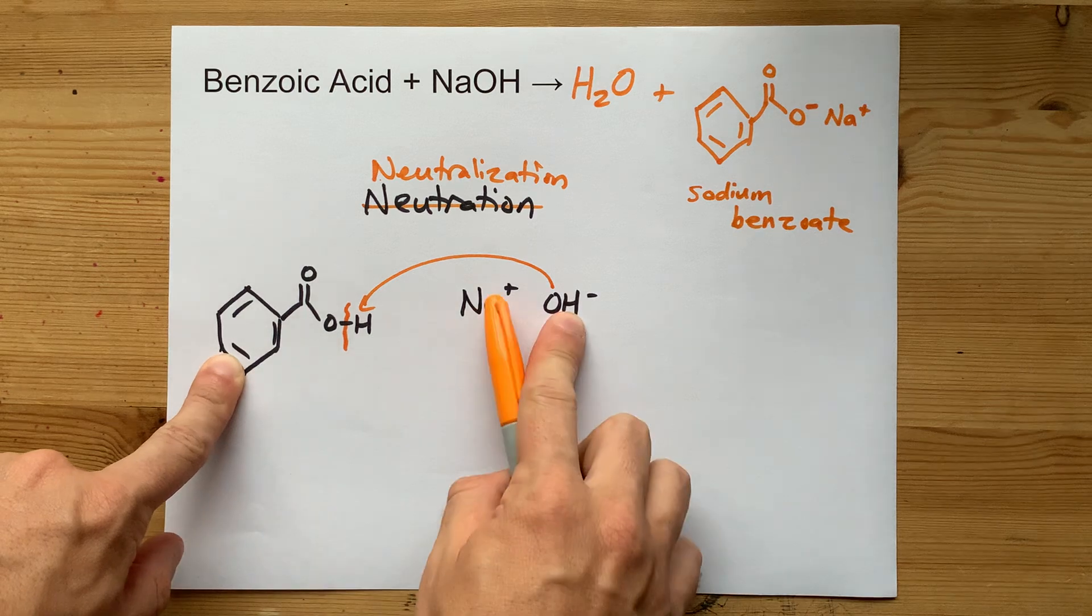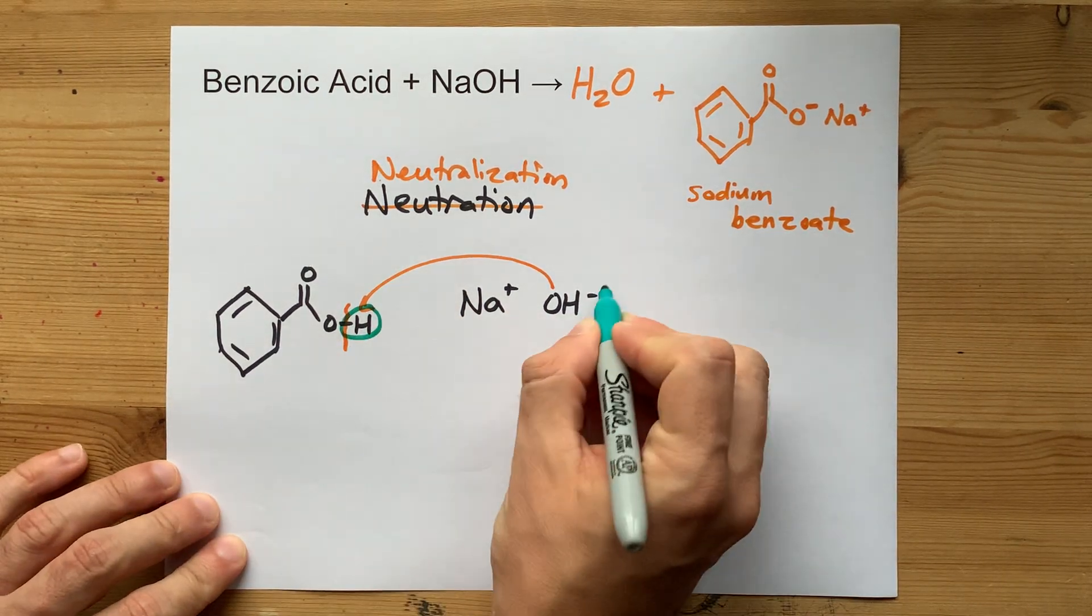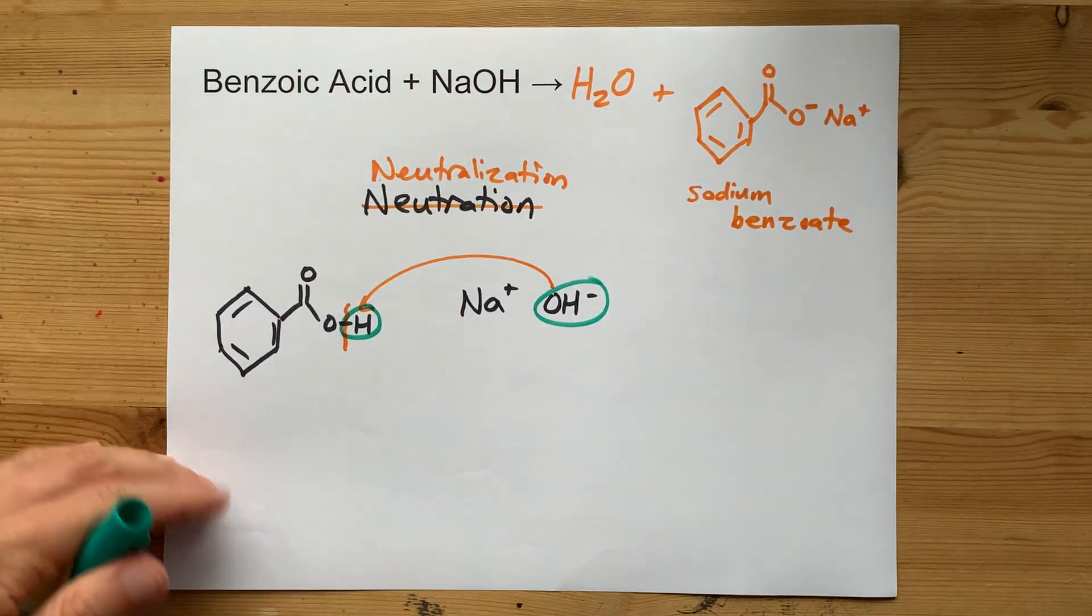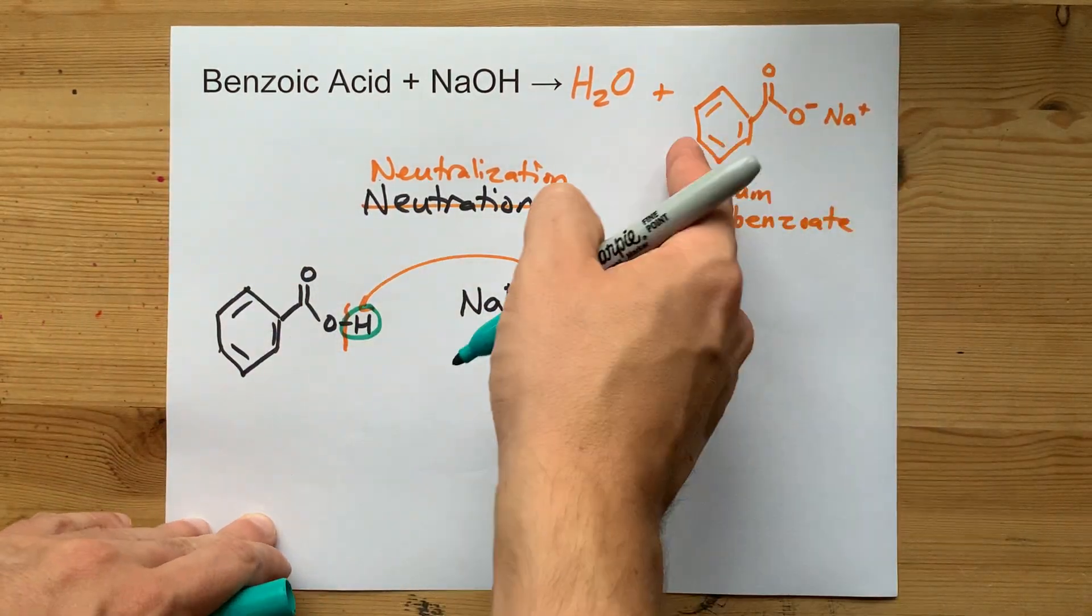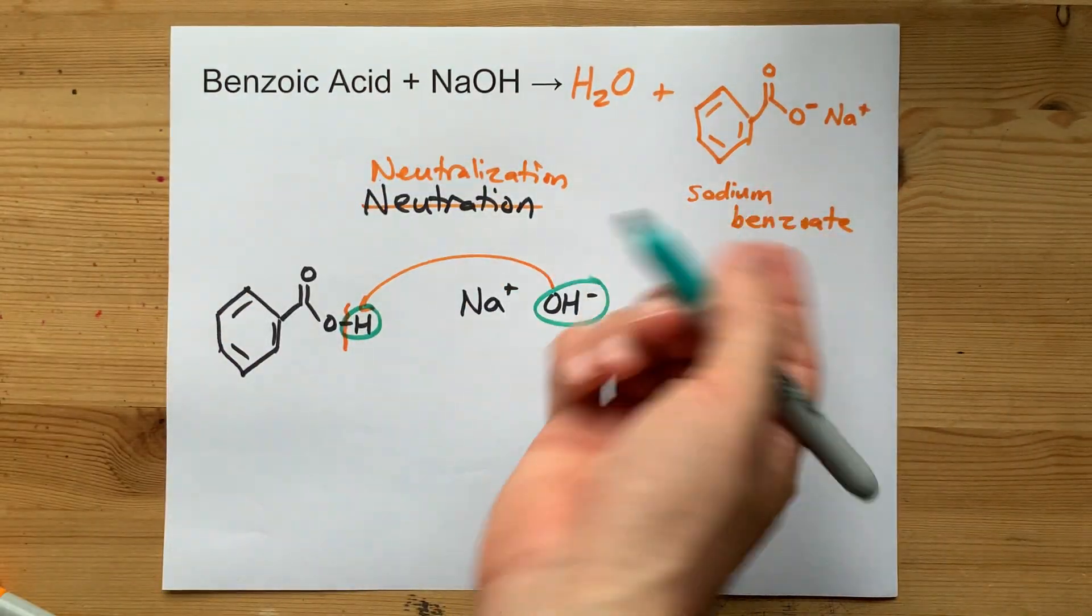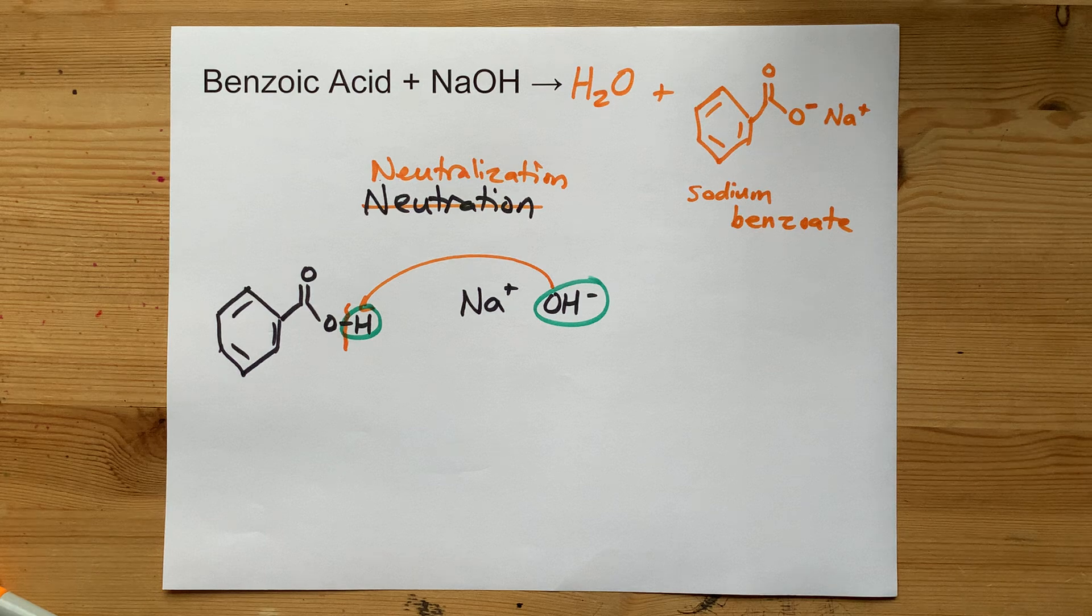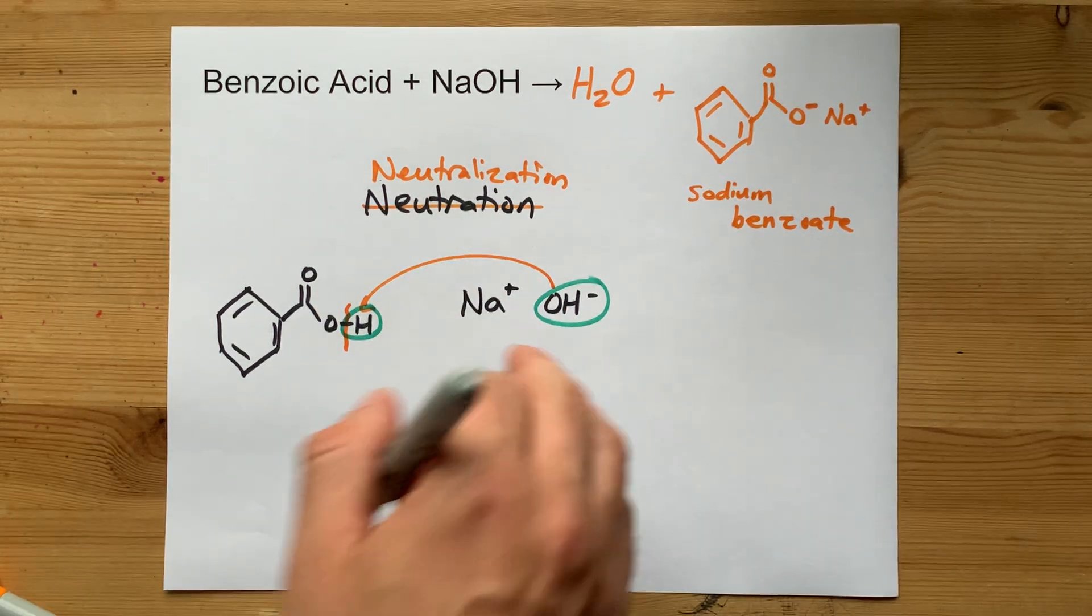Benzoic acid plus a strong base—you end up combining the H and the OH to make water. Then these two pairs combine to form the salt, and by salt I just mean a dissolved ionic compound. Cool. Neutralization. You should try it sometime. Best of luck.